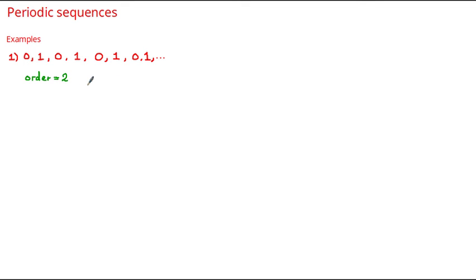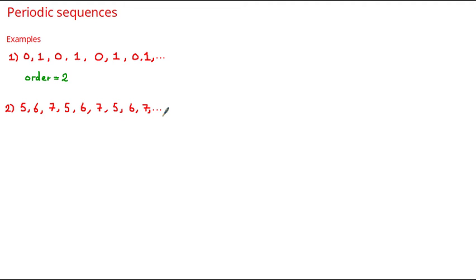Let's have a look at another example. Here's an example of another periodic sequence: 5, 6, 7, 5, 6, 7, 5, 6, 7, and so on. In this sequence we can see that there are three terms before the sequence repeats itself, and therefore the order is equal to 3.